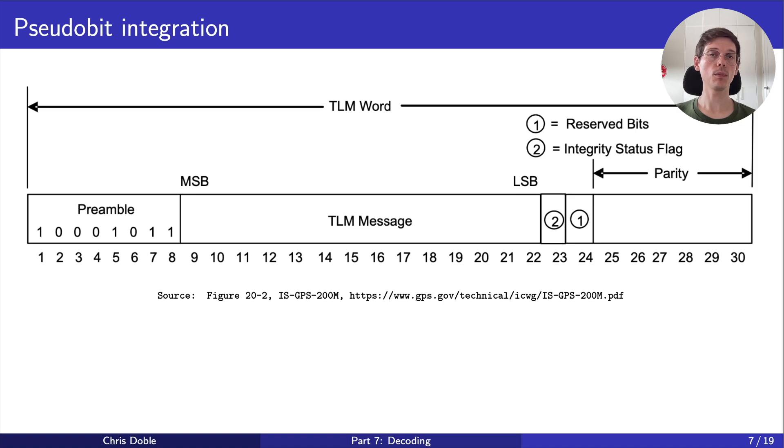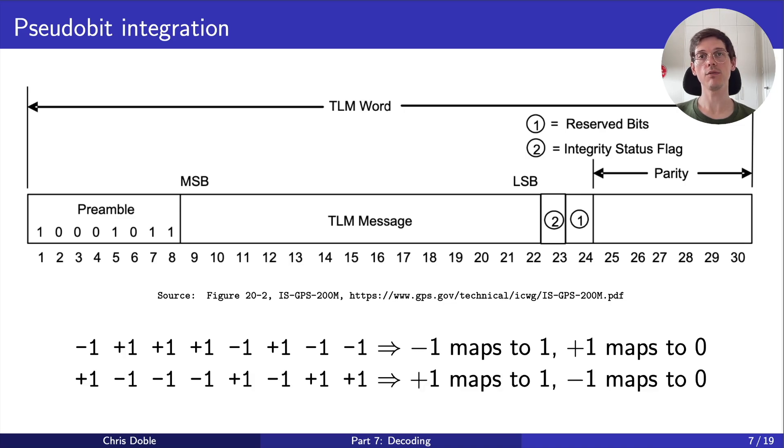Depending on the form of the matches, we'll know how pseudo-bits map to binary bits. If we find this sequence, we'll know that negative 1 maps to 1, and positive 1 maps to 0. If we find the inverse, we'll know it's the opposite. We call this mapping the bit phase.